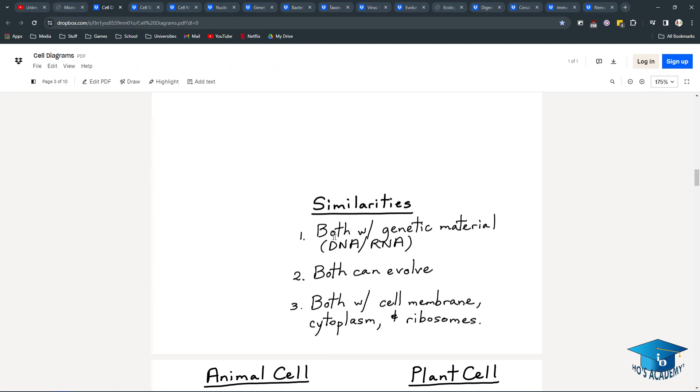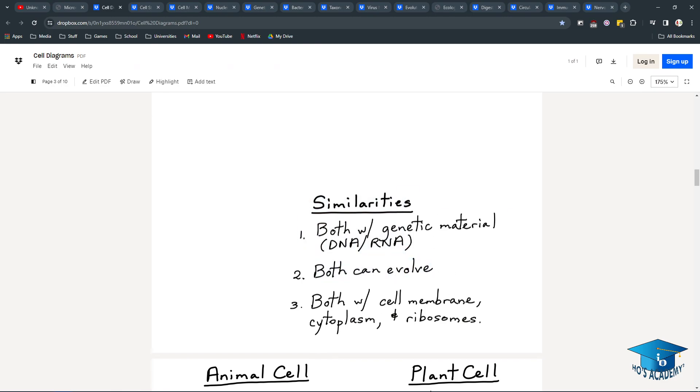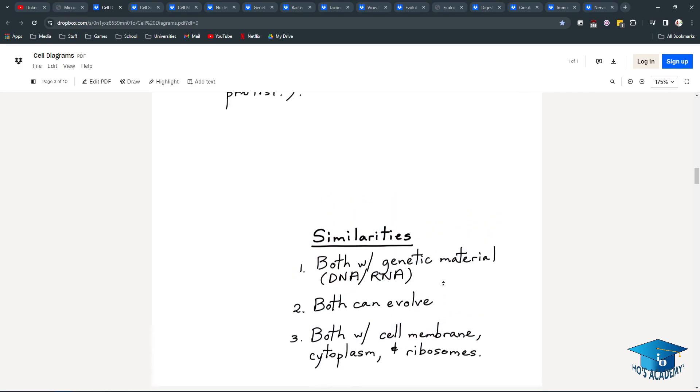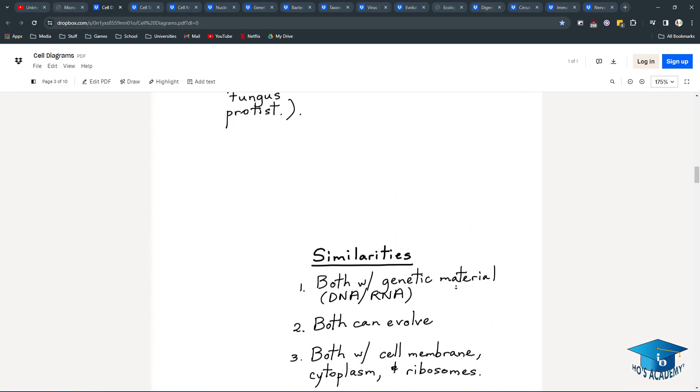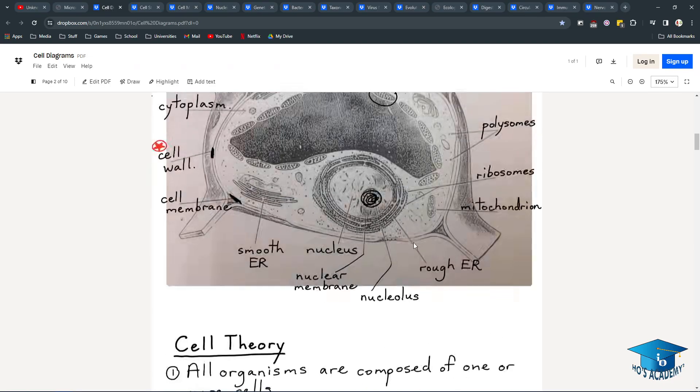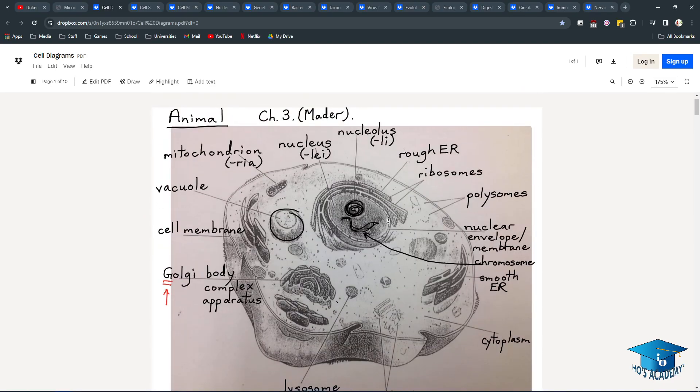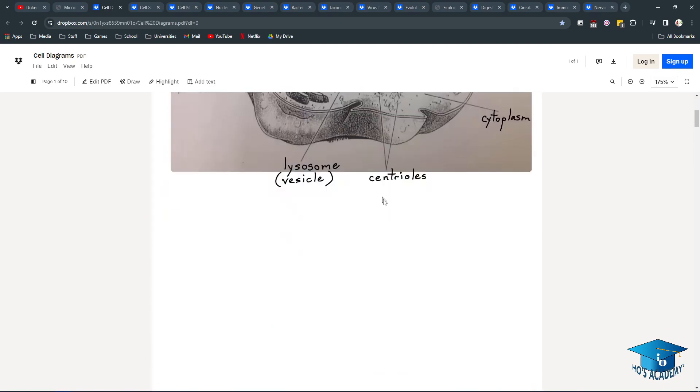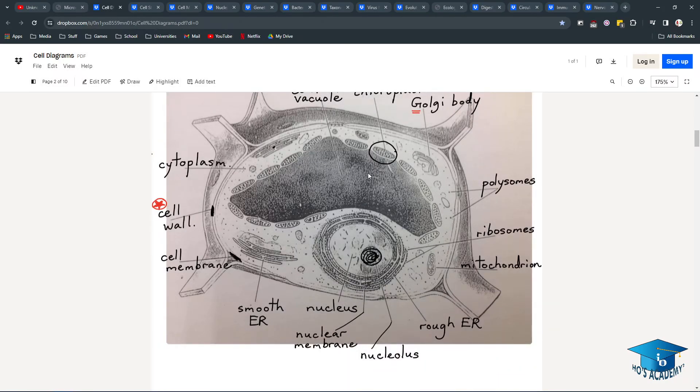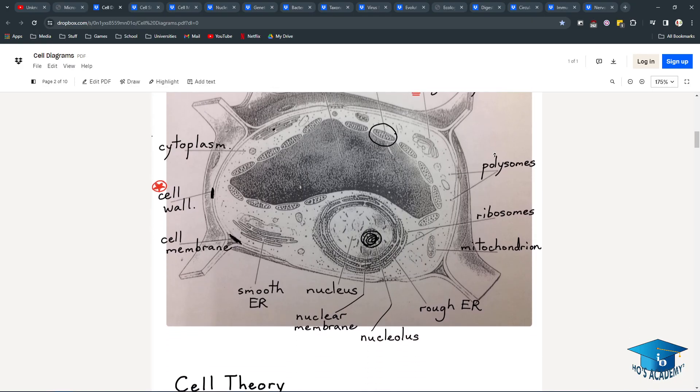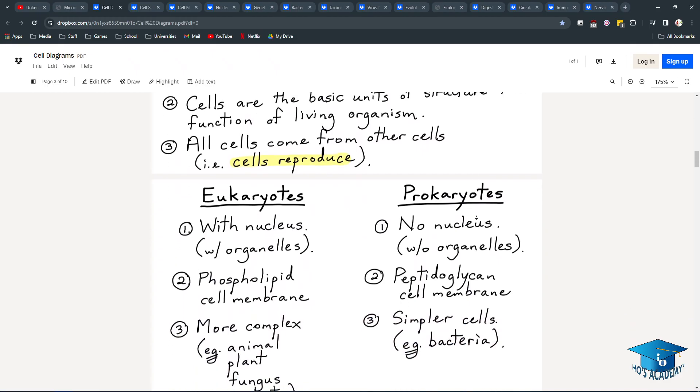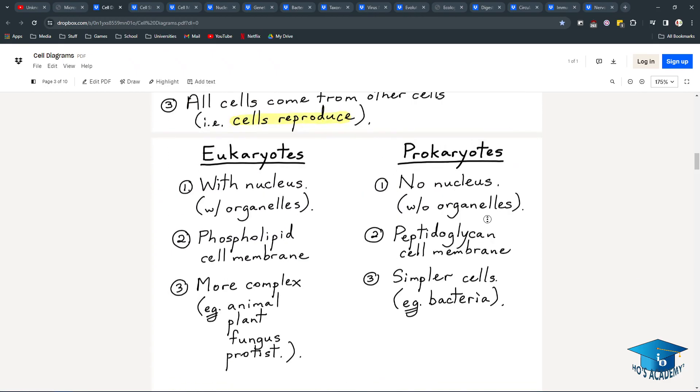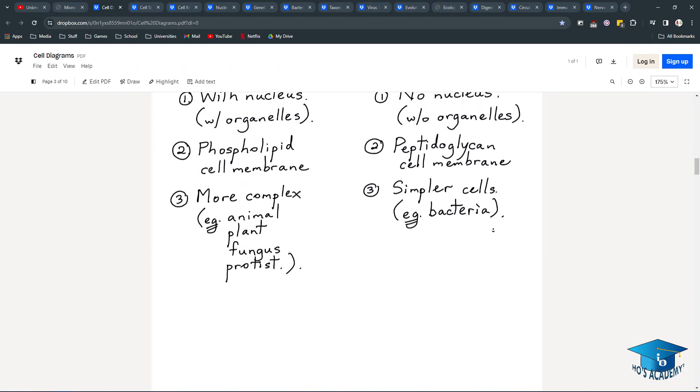Some similarities: both have DNA, RNA, both can evolve, both have cell membrane, cytoplasm, ribosomes. It's also good to note the cilia, flagella, and pili. Pili and flagella are prokaryotic. They're found in bacteria. Pili look like cilia, but they're the ones that can transfer DNA for reproduction.